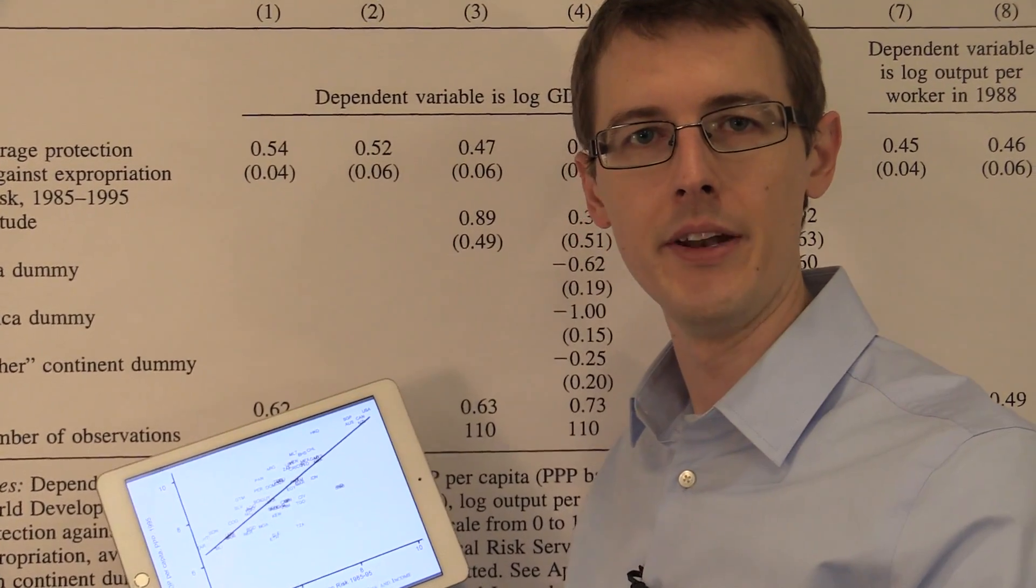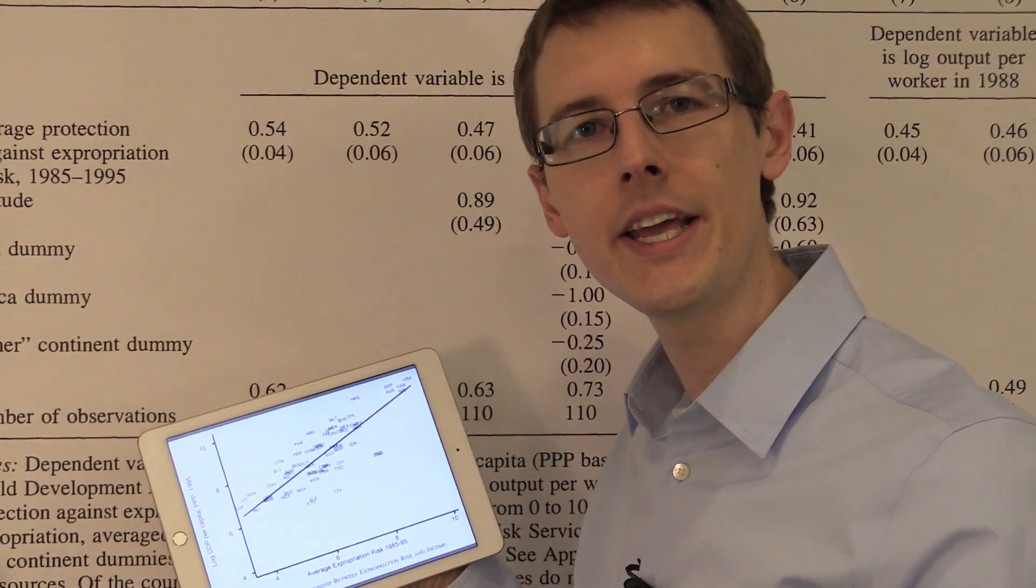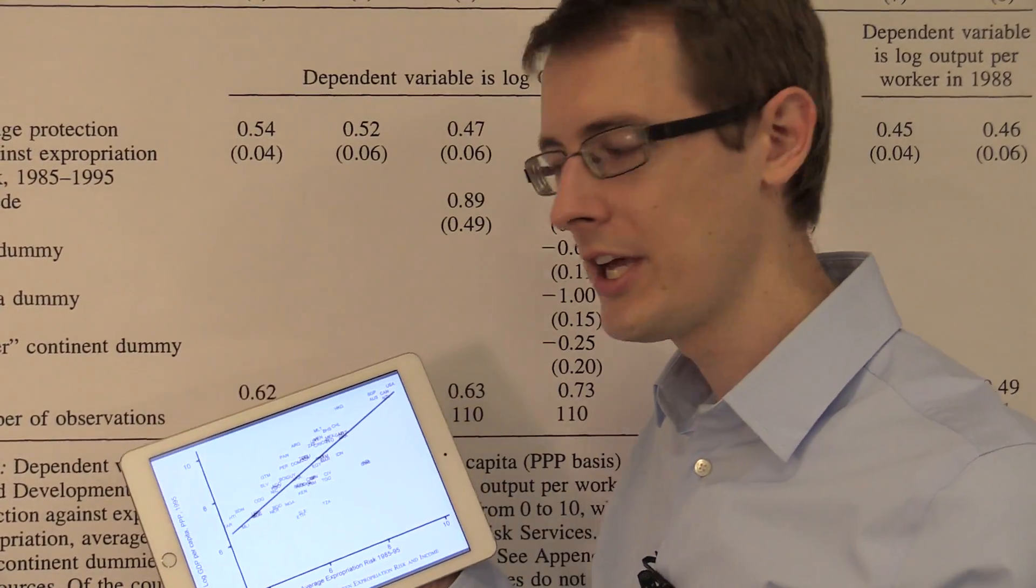Now change the line a little bit. Compute that distance, square it again. Change the line again. Compute the distance, square it. Change the line again.